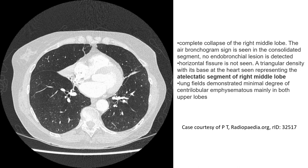The triangular density with its base at the heart represents the atelectatic segment of the right middle lobe. The lung field demonstrates a minimal degree of centrilobular emphysema mainly in both upper lobes.